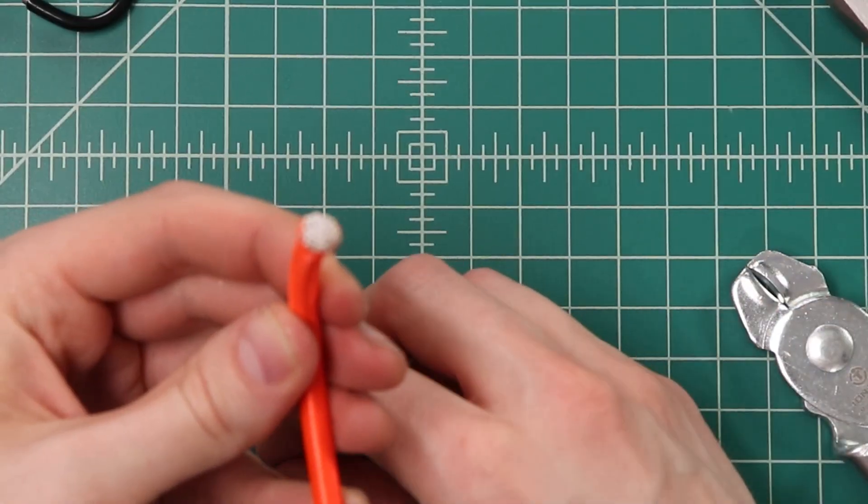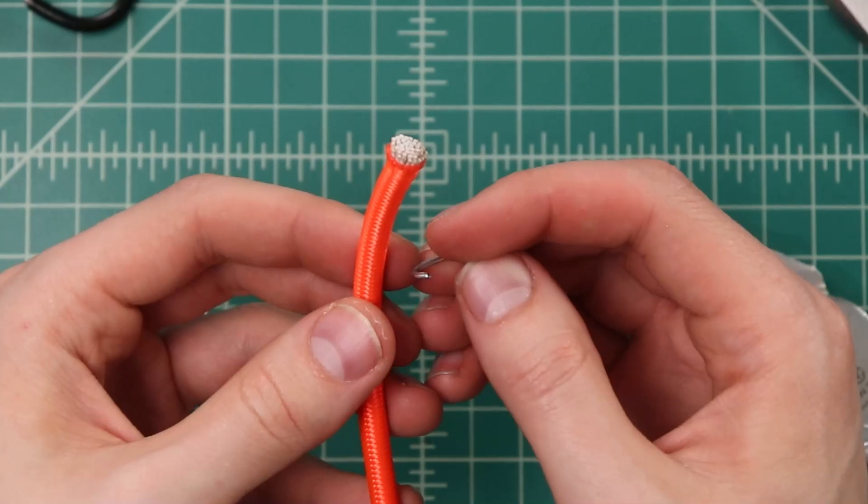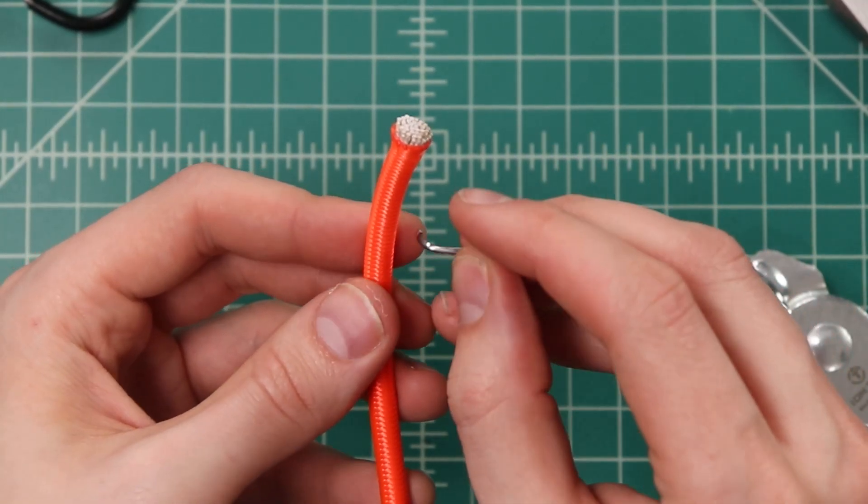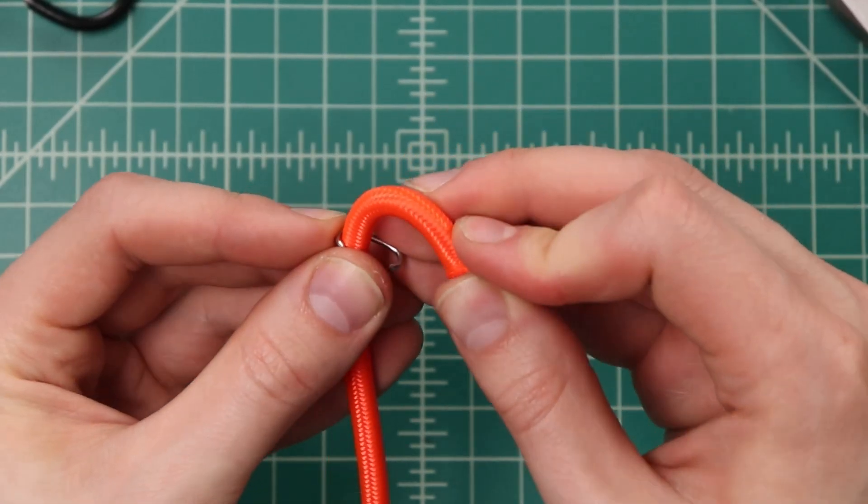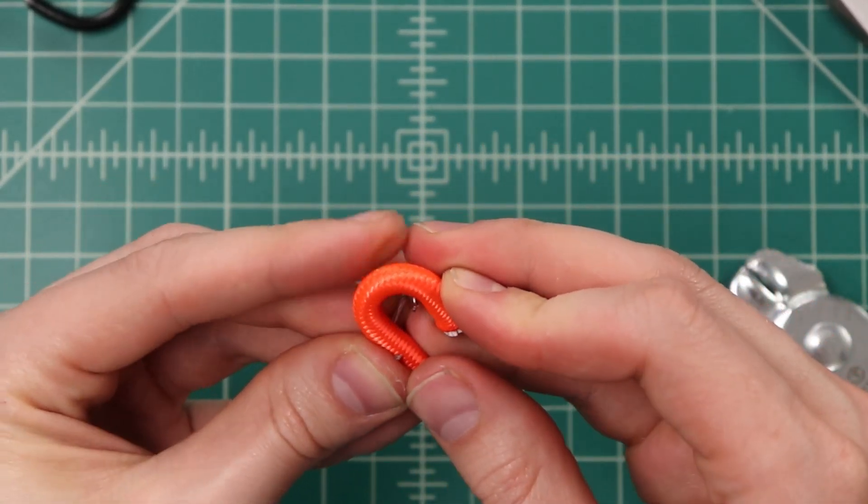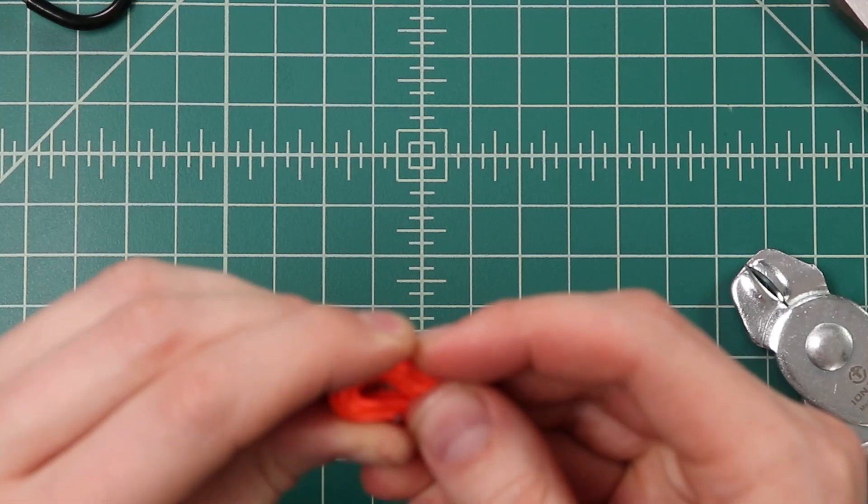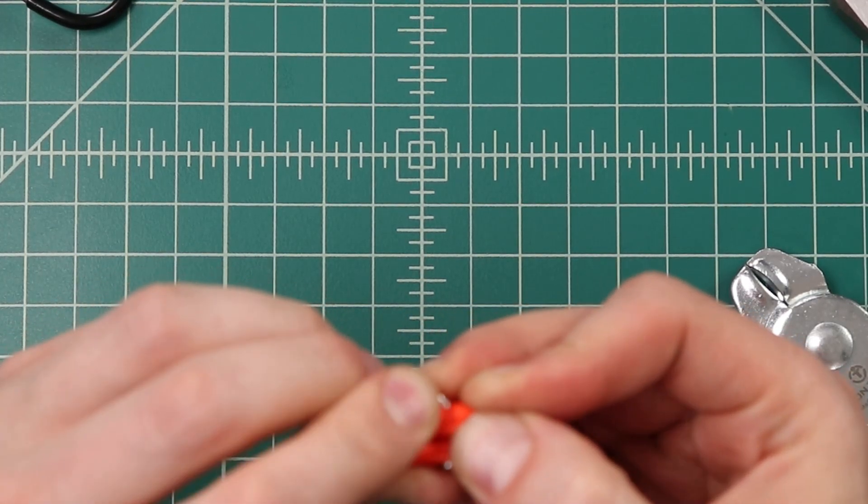Slide that down, and we'll take our end and a single hog ring, just hook it around, bend that cord over, and slide it into the hog ring right alongside the other end there.